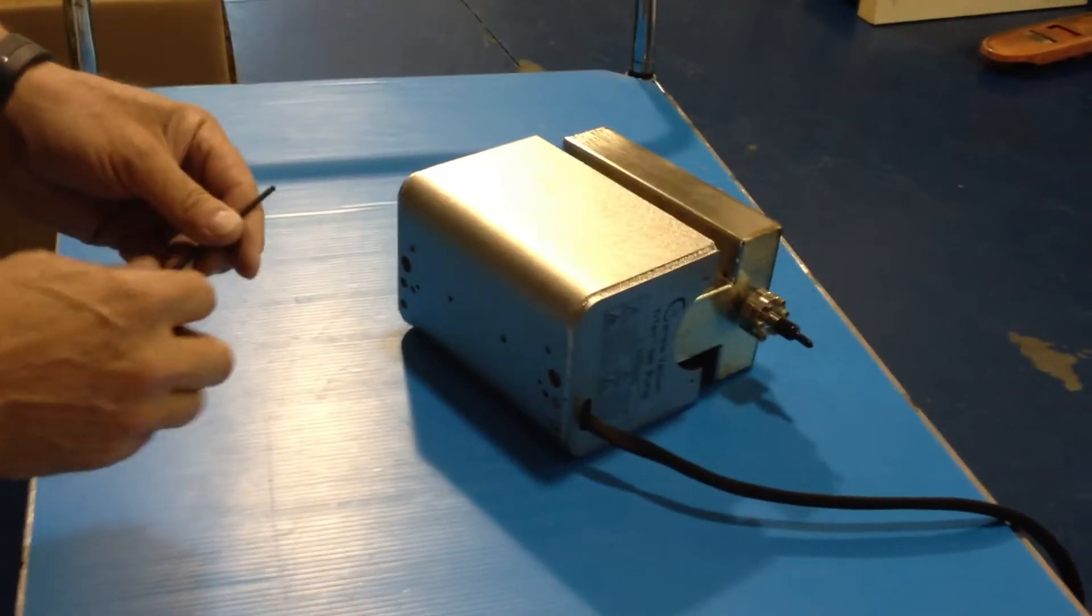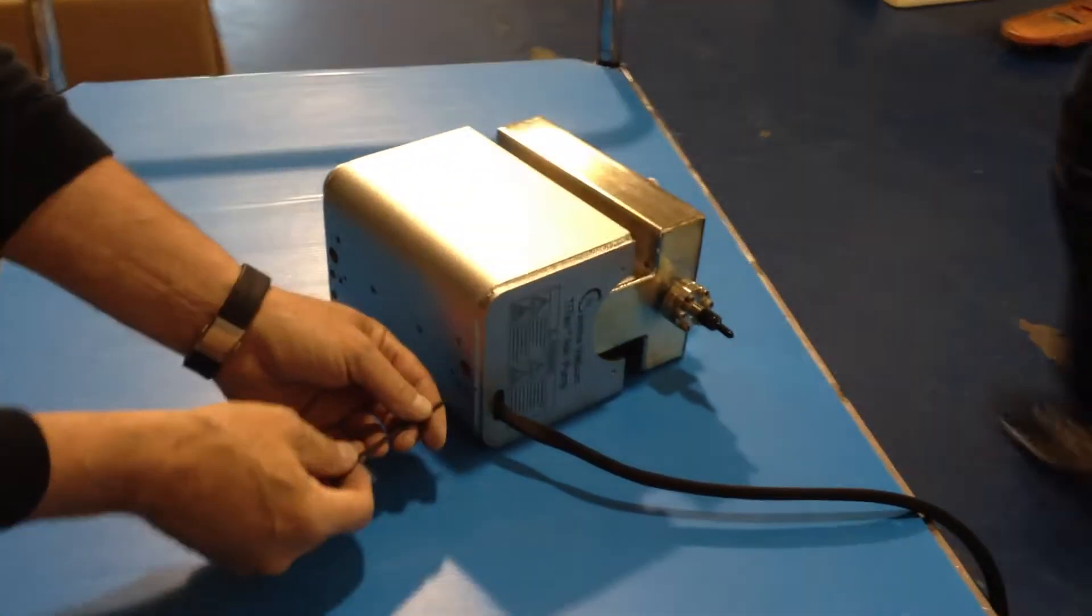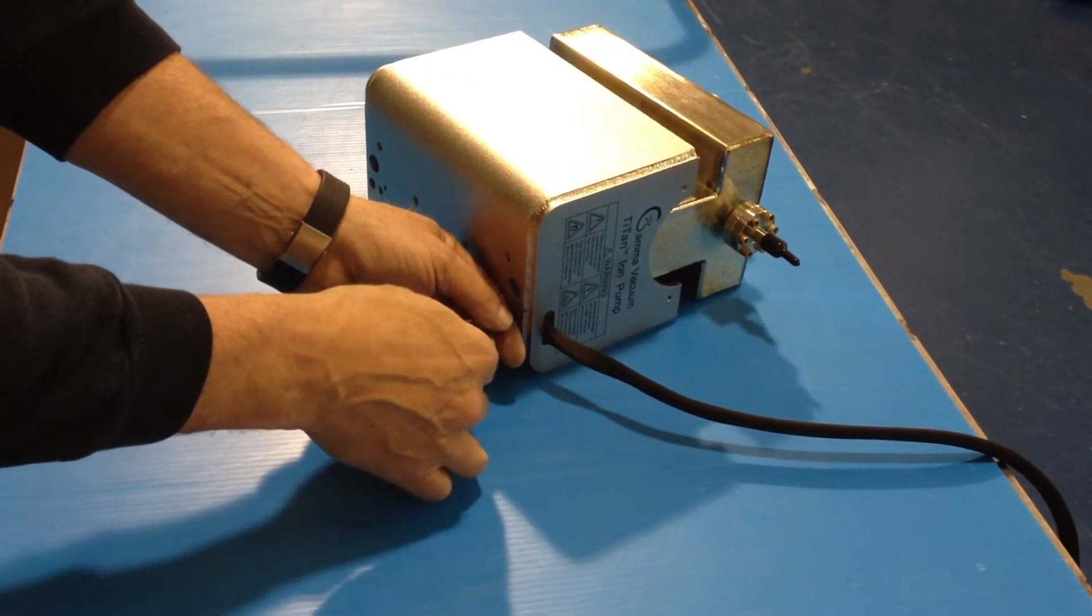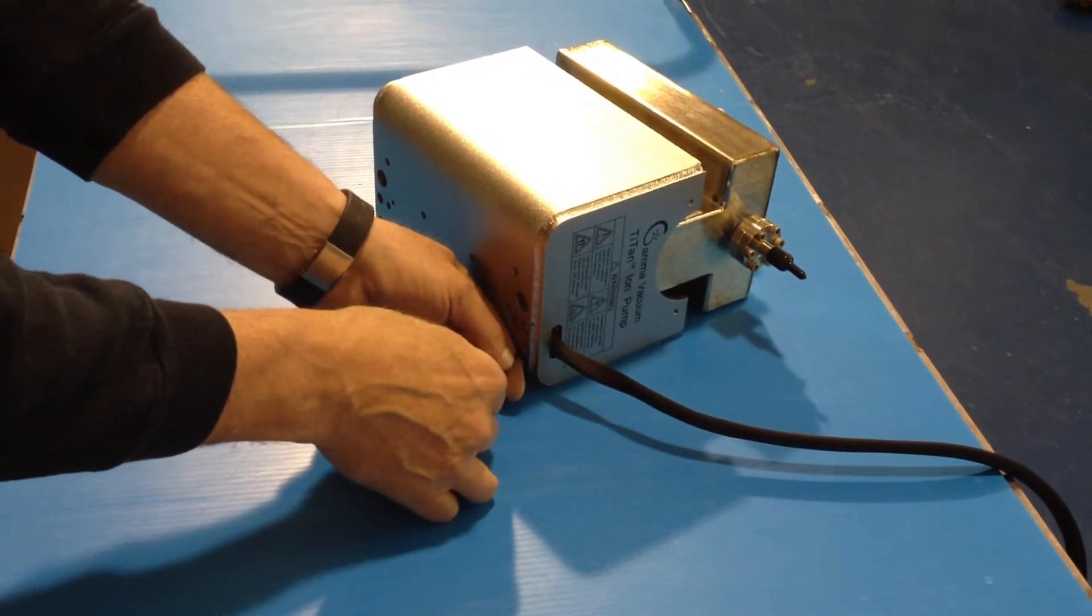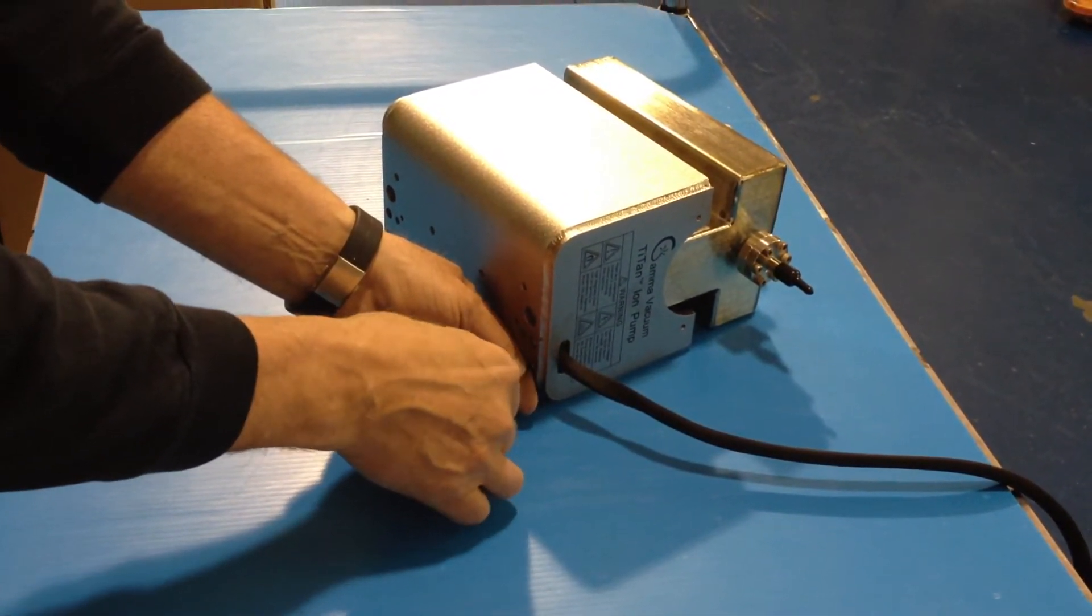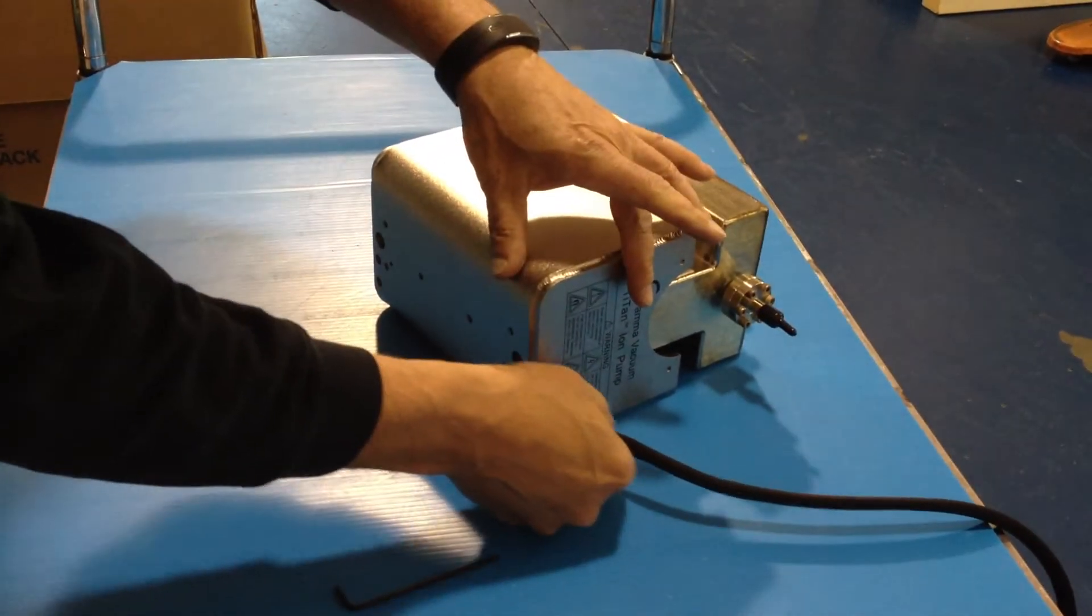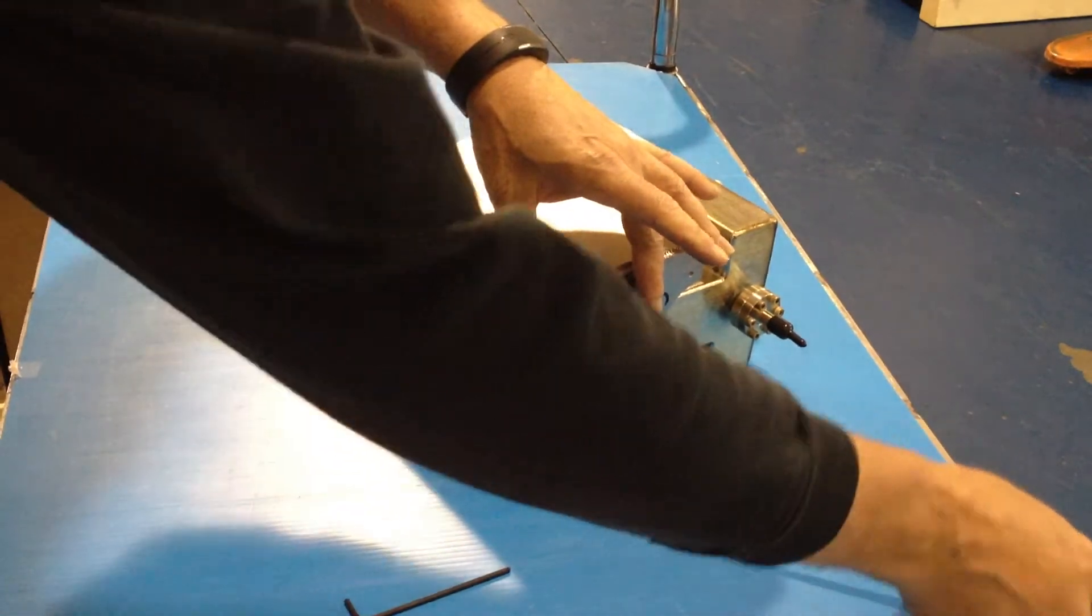Then you're going to want to take your 7/64 hex wrench, and we're going to undo the two bolts for the strain relief, which holds your heater wire and the sheeting in place. And that will allow us to pull the sheeting back.